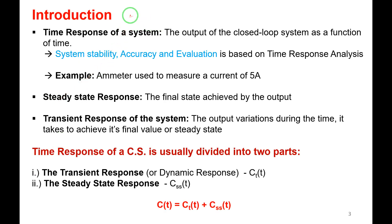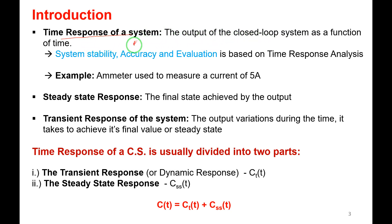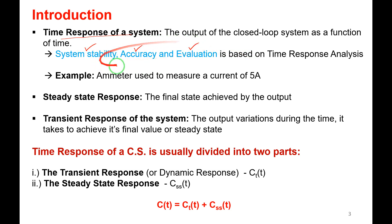In time response analysis, we study three things: system stability, accuracy of the system, and evaluation of the system. To understand these, let me take the example of an analog ammeter used to measure a current of 5 amps.